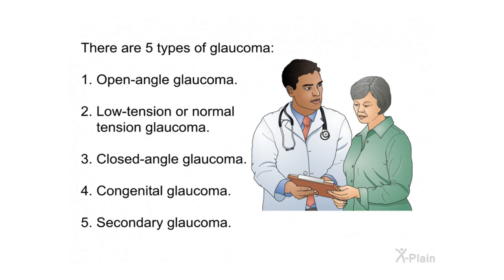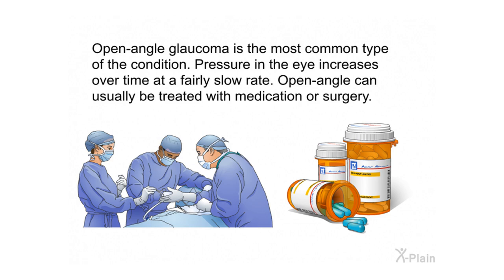There are five types of glaucoma: open-angle glaucoma, low tension or normal tension glaucoma, closed-angle glaucoma, congenital glaucoma, and secondary glaucoma. Open-angle glaucoma is the most common type. Pressure in the eye increases over time at a fairly slow rate. Open-angle glaucoma can usually be treated with medication or surgery.